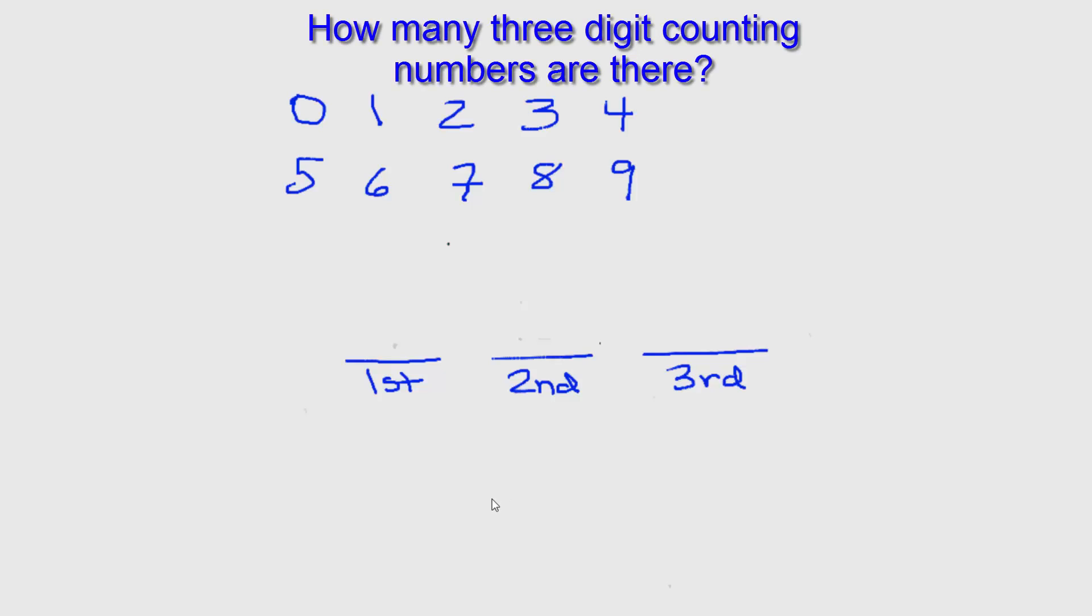Let's think about how we can count the number of 3-digit numbers in our base 10 number system that we use every day. One way to do that would be to realize that if we were to list out all the numbers from 1 to 999, that the first 99 numbers would not have 3 digits in them.